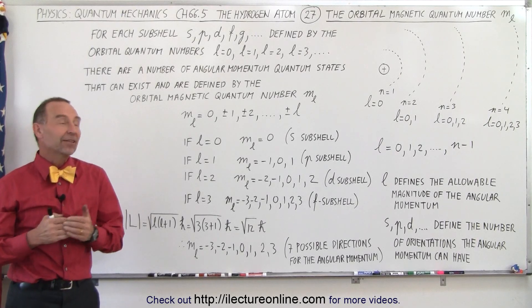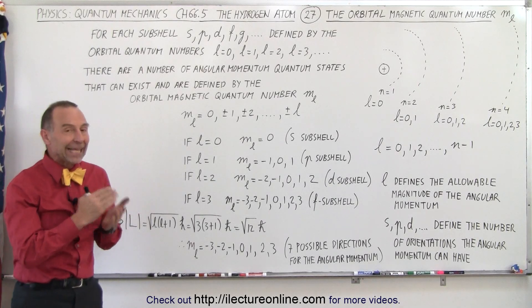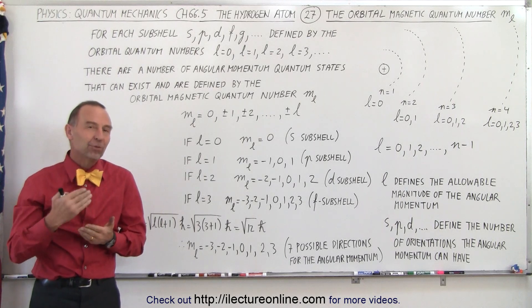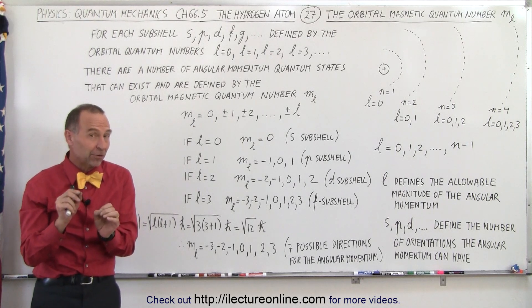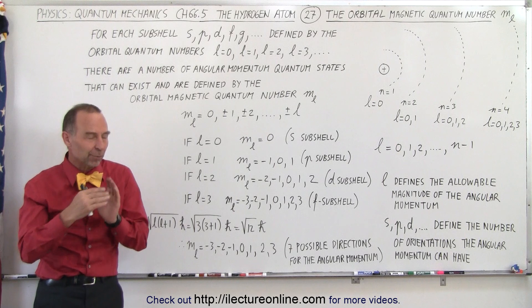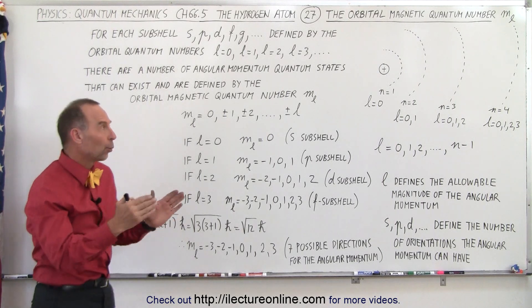Welcome to iLecterOnline. Now let's take a look at the orbital magnetic quantum number M sub L. In a way we've already talked about it a little bit in the previous video, but now we're going to make it clear what it represents.